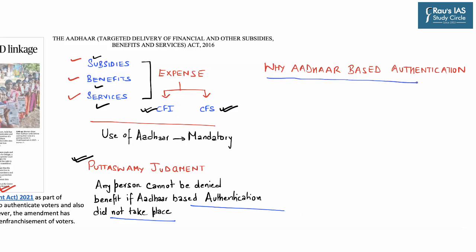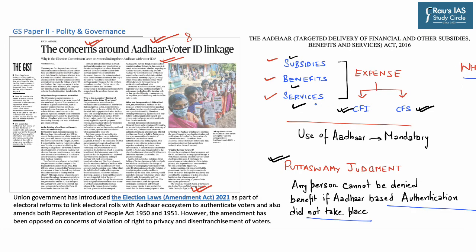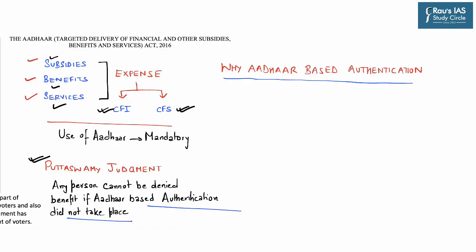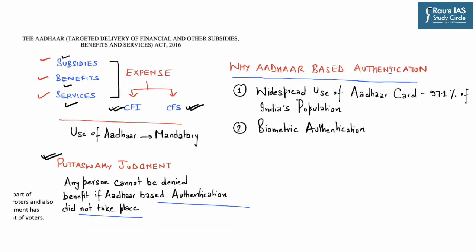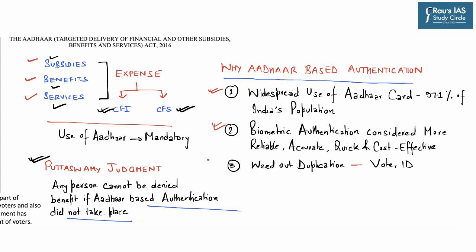The question is why Aadhaar-based authentication is preferred over other government documents such as a driving license or PAN card. The reasons include widespread use — as of now, approximately 97.1% of Indian citizens have an Aadhaar card — and its biometric authentication process, which is considered more reliable, quick, cost-effective and accurate. The third reason is to weed out duplication: if a person has more than one voter ID, such extra voter IDs will be made ineffective.